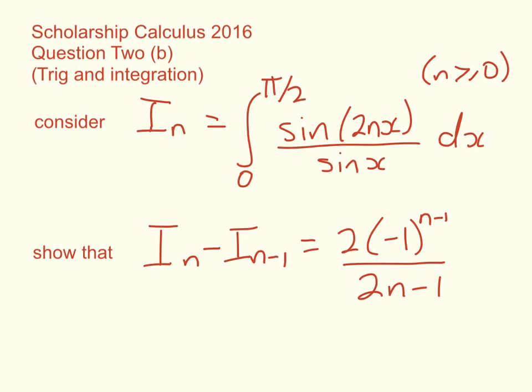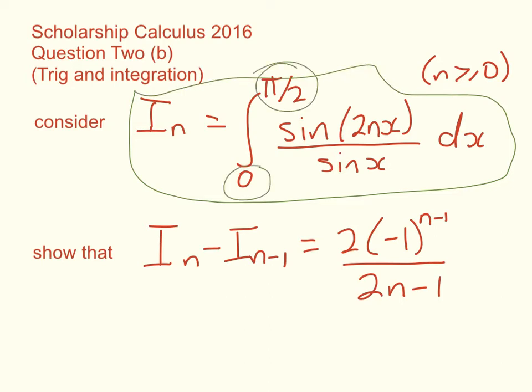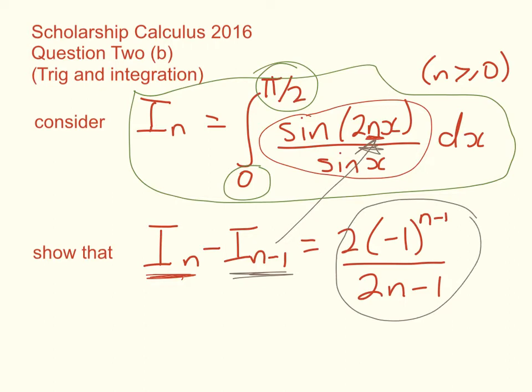So in this case we've got this integral here, the definite integral between 0 and pi on 2 of this quotient. And we're asked to show that if we have this integral with n in it, I_n take away I_{n-1}, which we'll substitute in there, we need to show that that simplifies all the way down to this thing here.